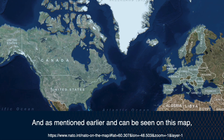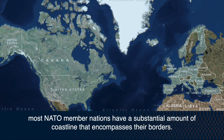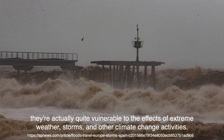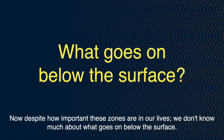As mentioned earlier, and as can be seen on this map, most NATO member nations have a substantial amount of coastline that encompasses their borders. Now, these coastlines are not static lines in the sand — they're actually quite vulnerable to the effects of extreme weather, storms, and other climate change activities. Despite how important these zones are in our lives, we don't know much about what goes on below the surface.